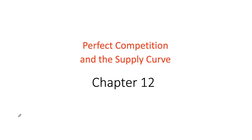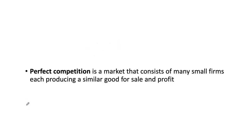Hello everyone, welcome back. Today we are doing Perfect Competition and the Supply Curve, which is Chapter 12 of our textbook, Microeconomics by Krugman, Wells, Owen, Parkinson, the 4th Canadian edition. In this chapter, we are essentially looking at how a firm in a perfectly competitive market works.